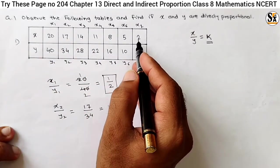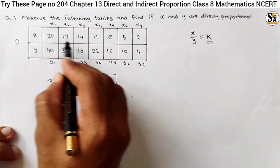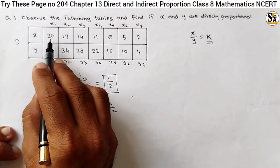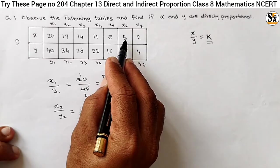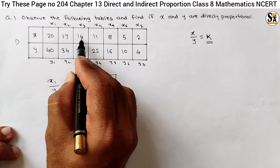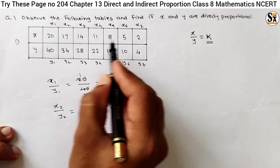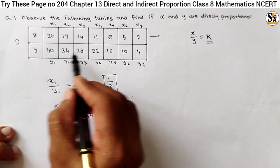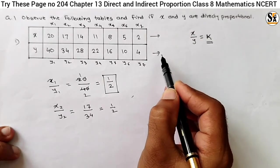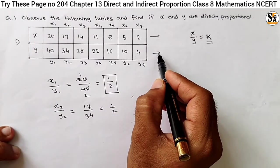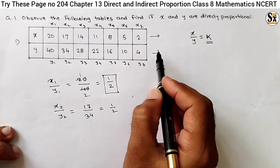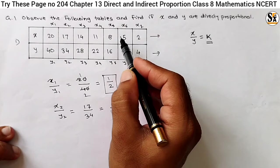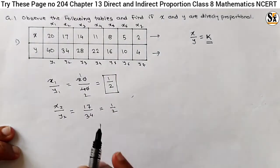Let's try for the remaining also. What is in the table? We see that the value of x decreases: 20, 17, 14, 11, 8, 5. It is in decreasing order. Similarly, the value of y also decreases. But it is not the only condition that both values must decrease — they should decrease in the same manner. That means their ratio at different stages must be constant. So the ratio for all these values must be constant.